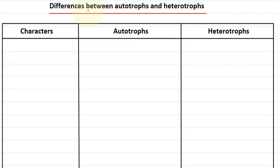Namaste everyone, I am your co-host Shawnee ma'am. Welcome to your favorite learning channel. The topic for today's video is differences between autotrophs and heterotrophs. So we know that there are two different modes of nutrition — autotrophic nutrition and heterotrophic nutrition — and the organisms that follow these are called autotrophs and heterotrophs respectively. Today we will be discussing the differences between them.